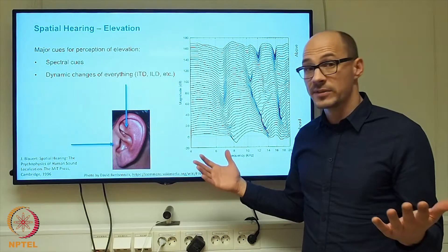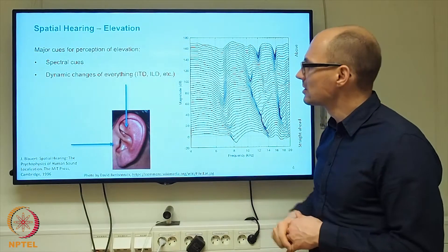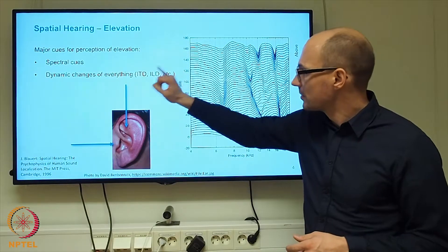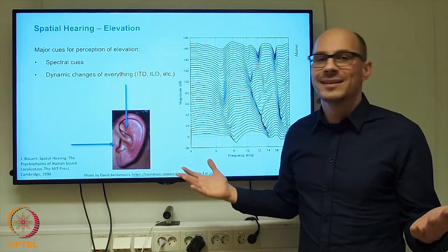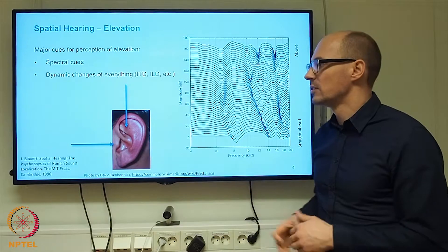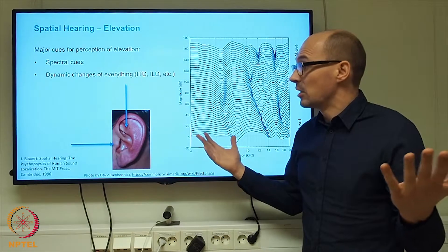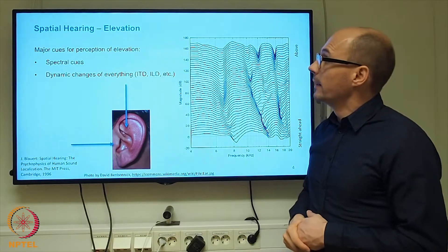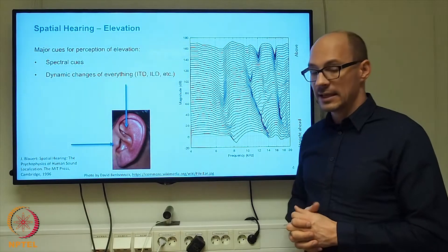HRTFs basically represent the transfer path from a sound source location to the ear canal entrance, and they include all the cues such as interaural time difference, interaural level difference, the spectral cues, and technically also the dynamic changes of each of these cues, because you can certainly include different head orientations in the definition of what is an HRTF, what is a head-related transfer function.